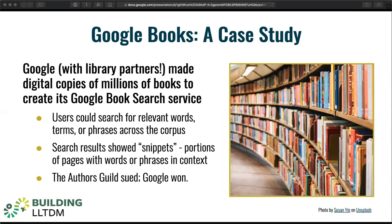Let's take a look at how fair use applies to text and data mining using a recent example, Authors Guild v. Google. This case arose when Google made digital copies of millions of books from partner research libraries and made the resulting corpus searchable through its Google Books service. They sent digital copies back to the libraries who provided the print books, and the libraries banded together to create the HathiTrust to manage the collective collection of those scans, together with other digital content.